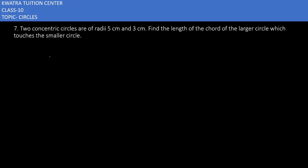Let's start with question number 7. It says two concentric circles are of radii 5 cm and 3 cm. Find the length of the chord of the larger circle which touches the smaller circle.